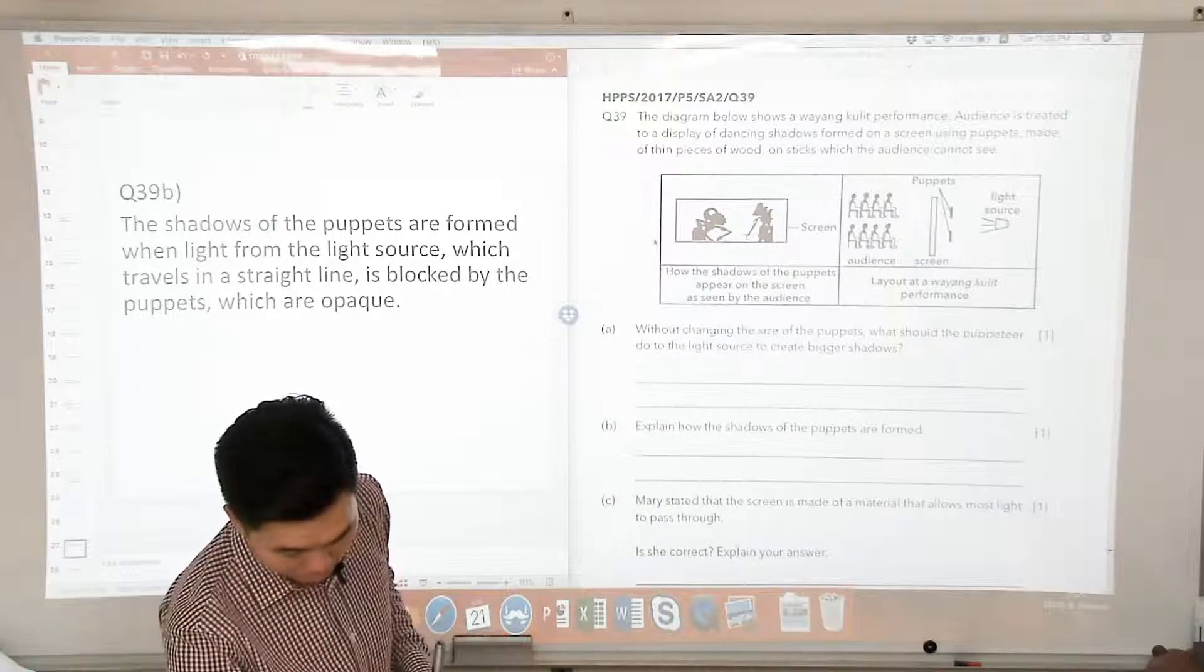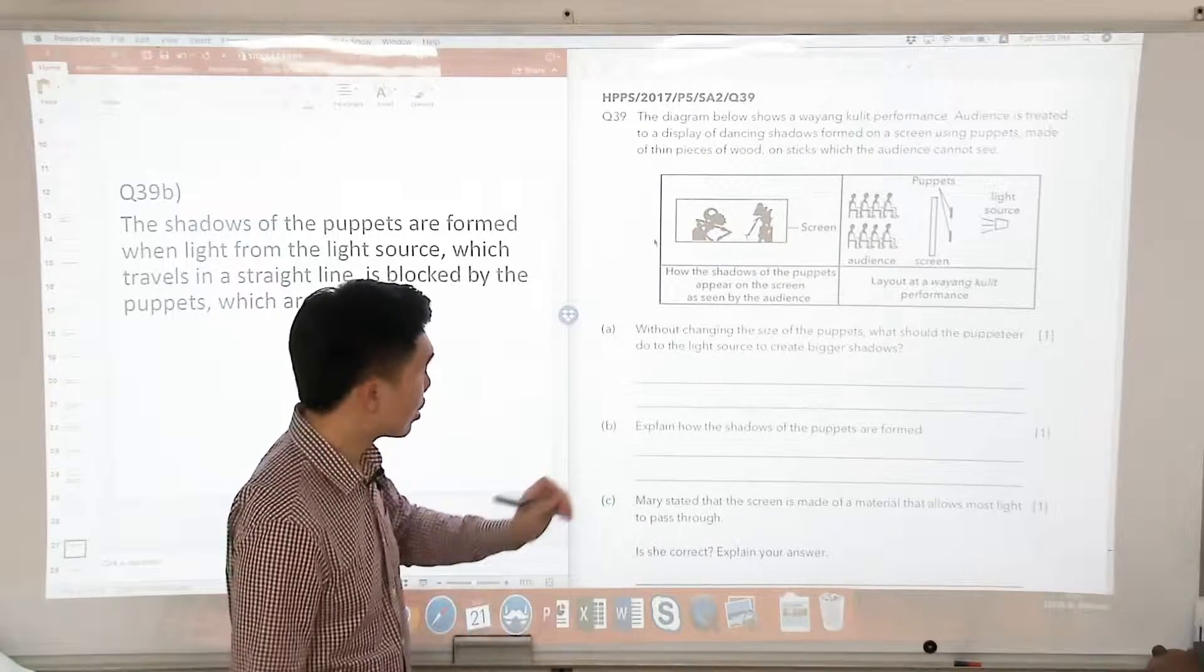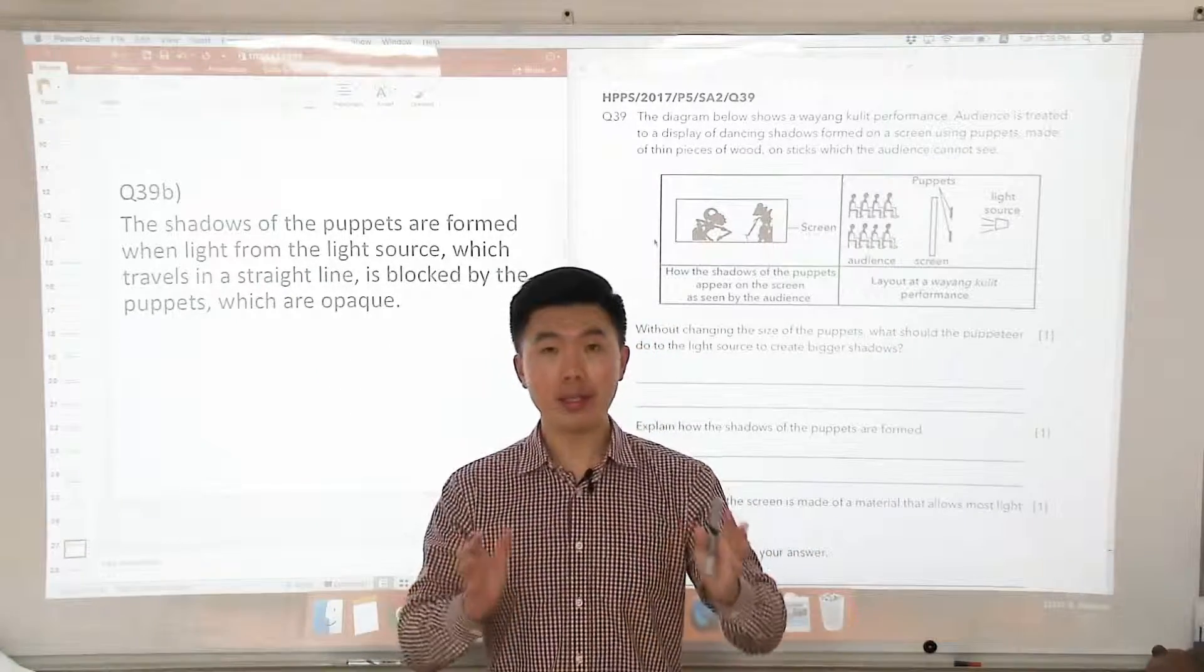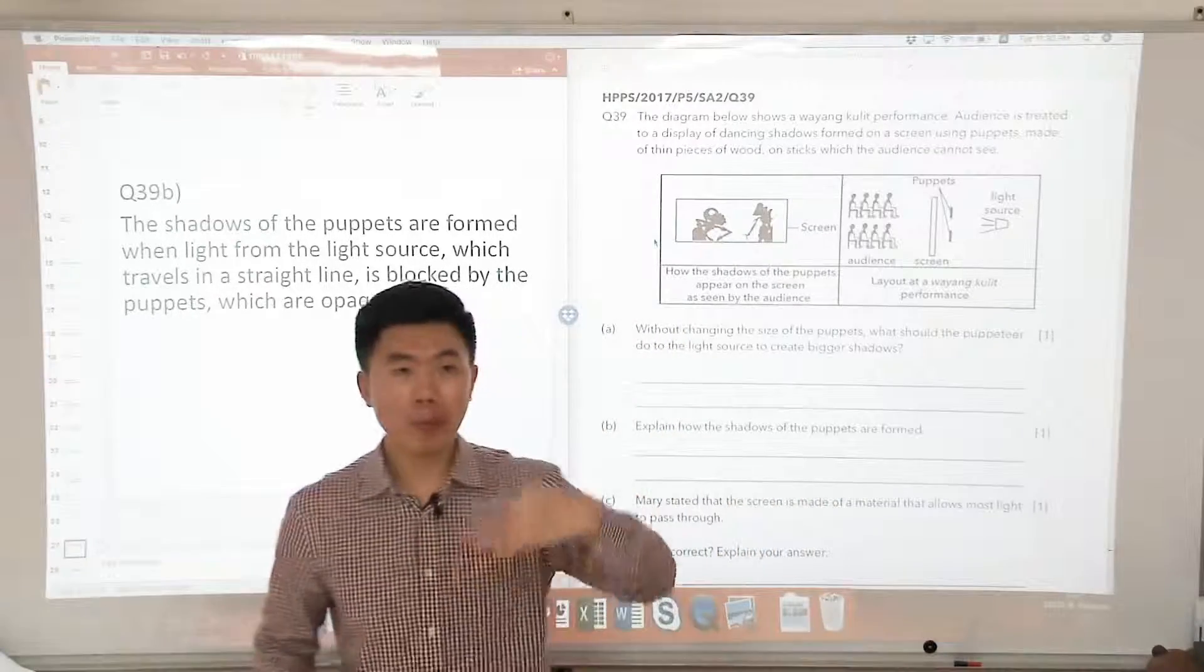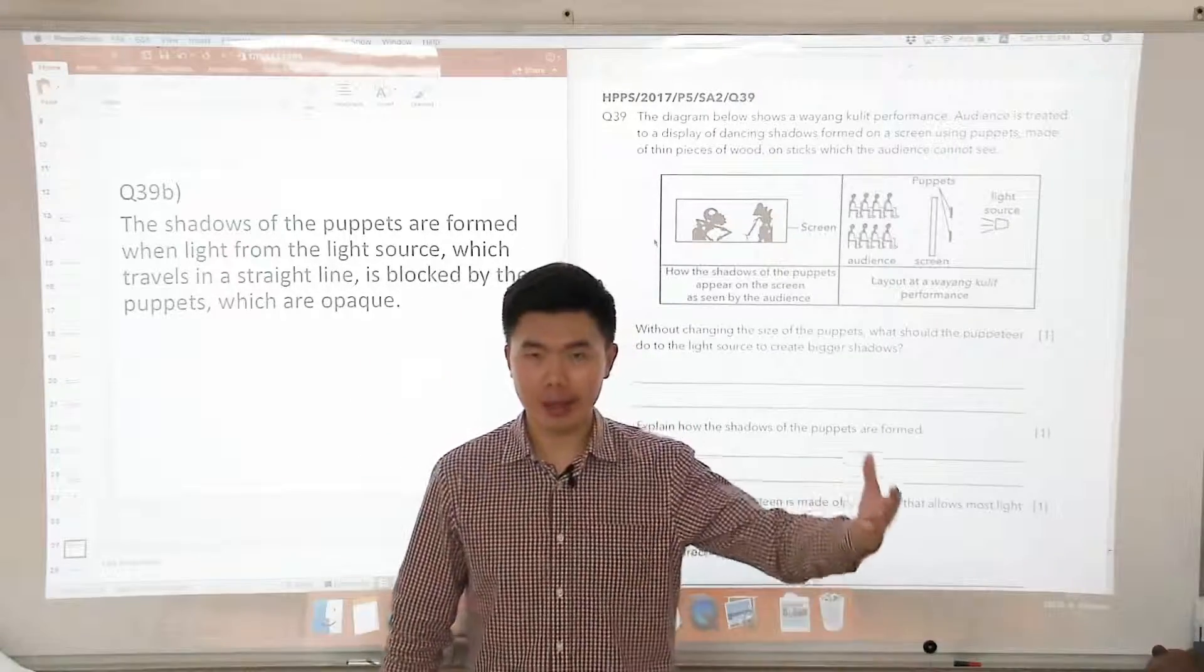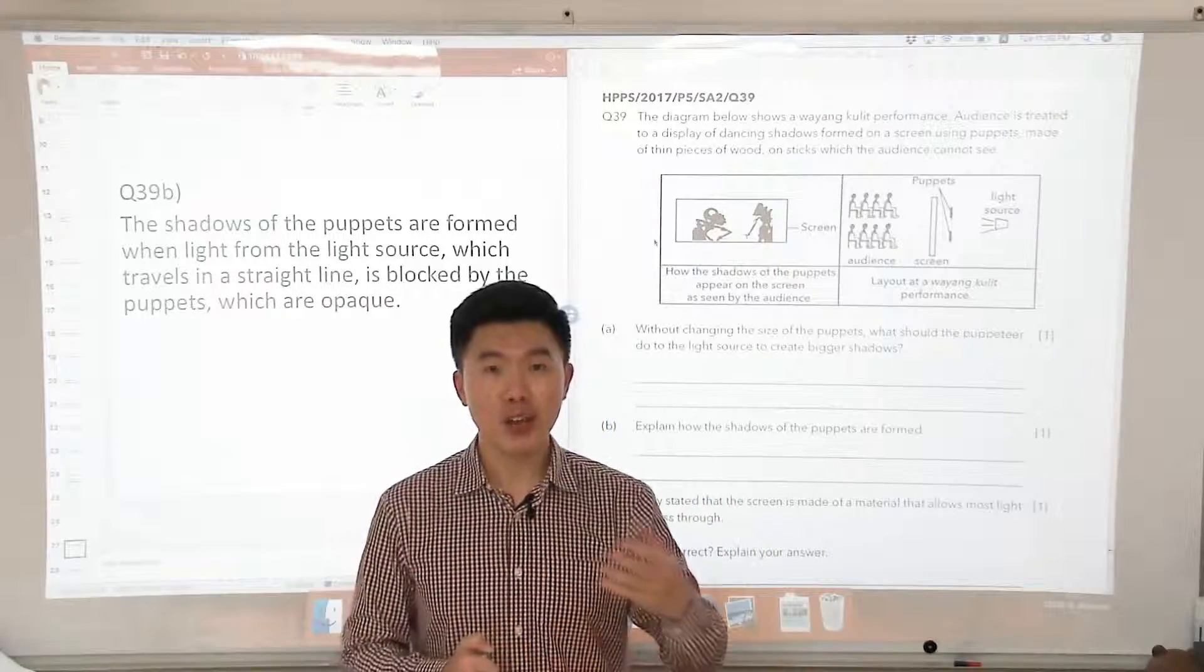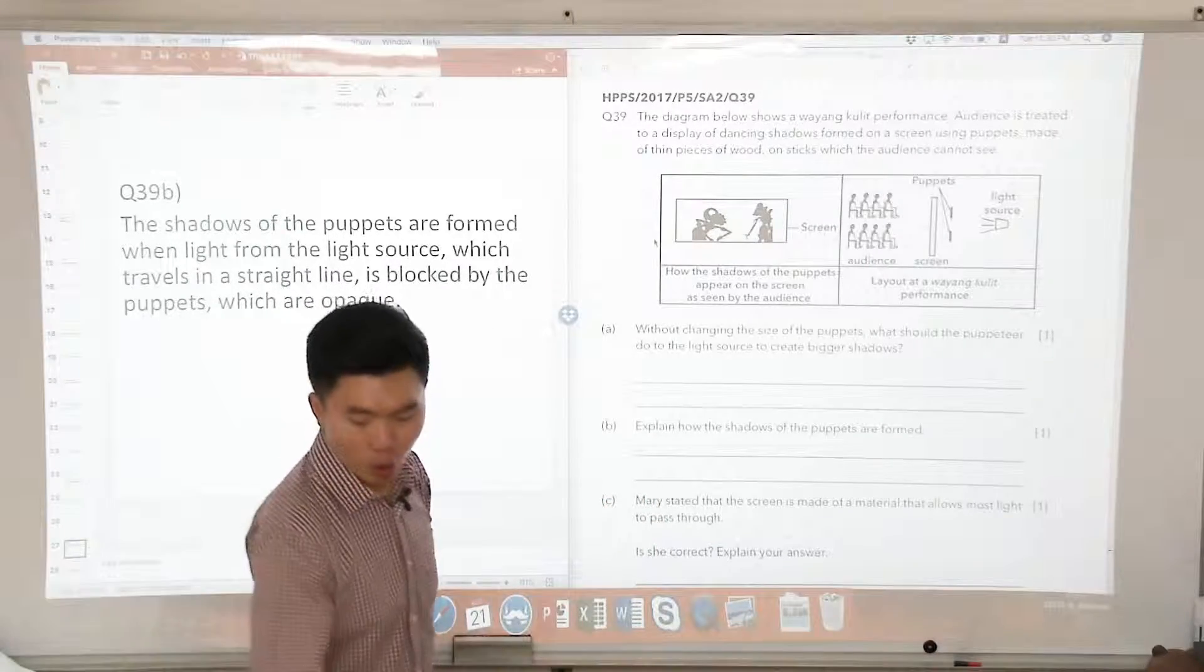Let's look at C. Mary stated that the screen is made of a material that allows most light to pass through. If a material allows most light to pass through, what does that mean? This means that this is a transparent material. Are you able to form shadows on transparent materials? Think about this. A transparent material is like glass. Are you able to form a shadow on glass? The answer is no. So is she correct? No, she is not correct.